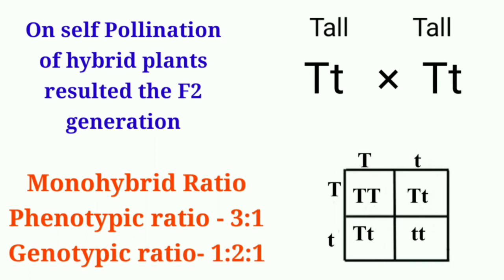From the Punnett square, we can confirm this: TT (homozygous tall) appears once, Tt (heterozygous tall) appears twice, and tt (homozygous dwarf) appears once. So three individuals in the Punnett square are tall and one individual (tt) is the dwarf plant. This is called the monohybrid ratio.